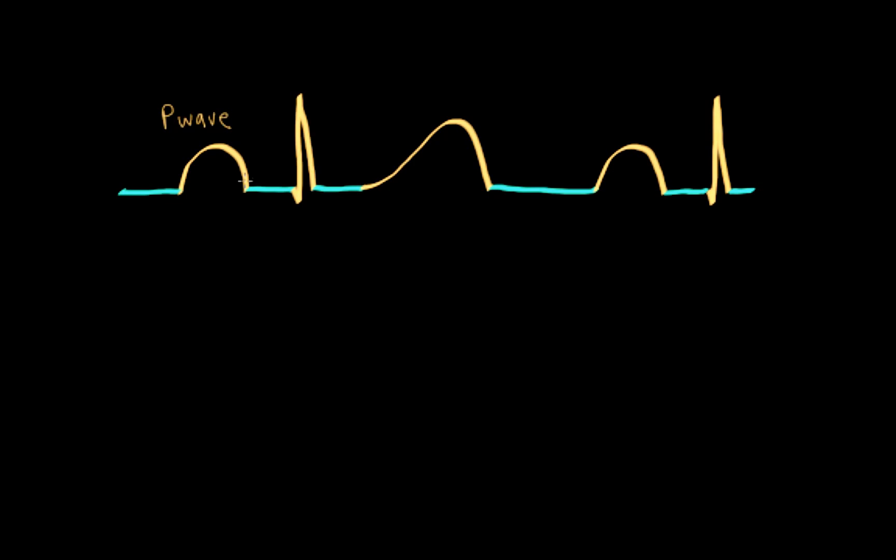I want you to also keep in mind that the atrial depolarization is what triggers the atrial muscle contraction. And so the P wave begins just a little bit before the beginning of the A wave when you're looking at atrial pressure changes during the cardiac cycle.